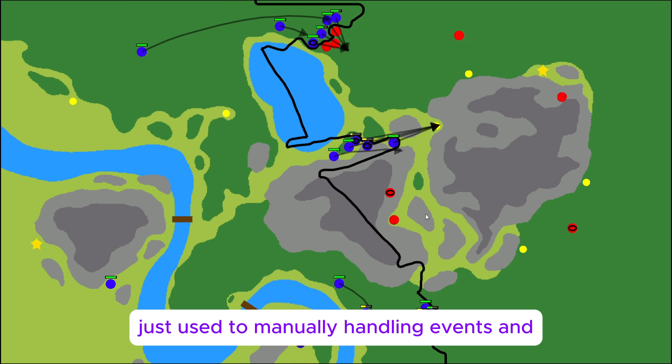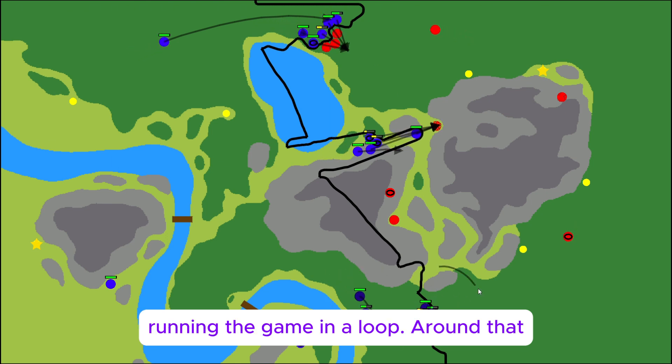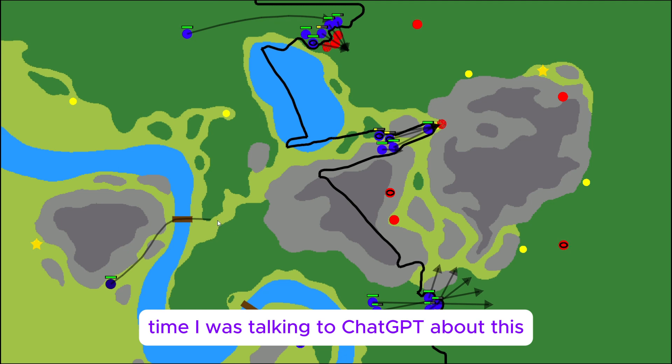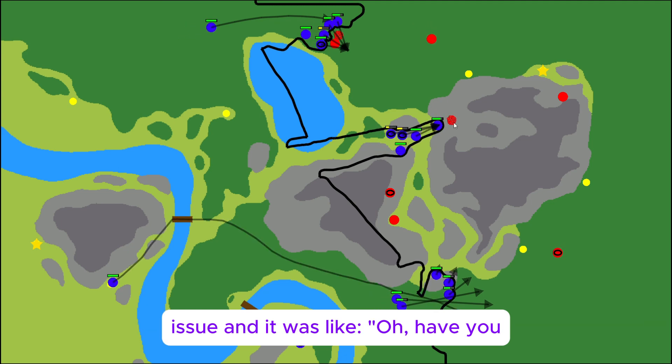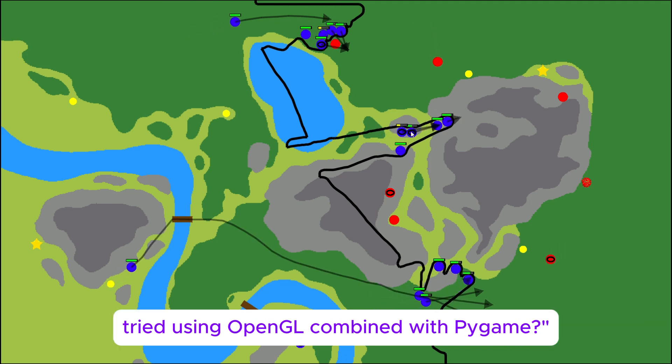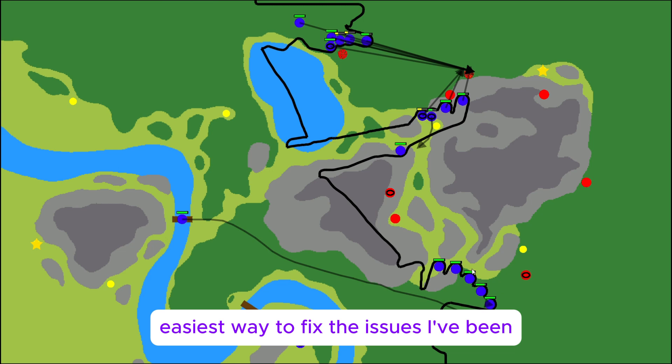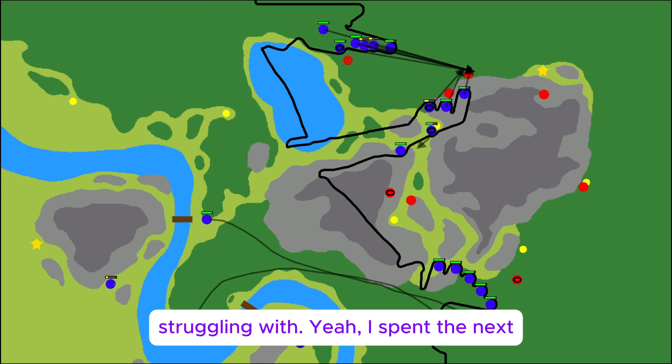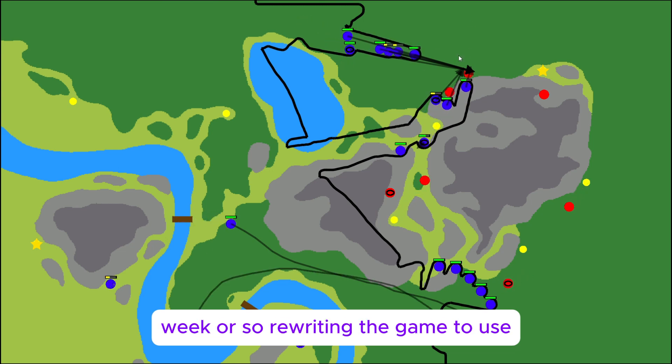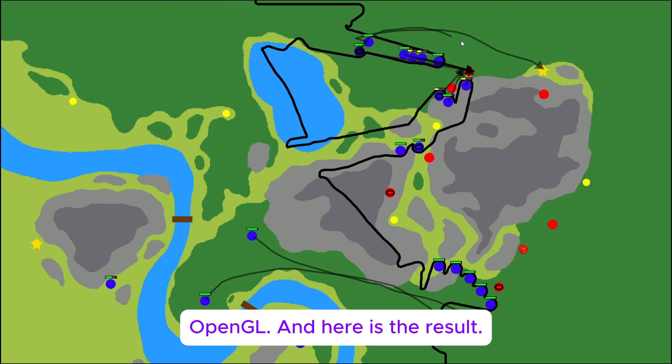I was just used to manually handling events and running the game in a loop. Around that time, I was talking to ChatGPT about this issue, and it was like, oh, have you tried to use OpenGL combined with PyGame? And I realized that was literally the easiest way to fix the issues I've been struggling with. Yeah, I spent the next week or so rewriting the game to use OpenGL, and here is the result.